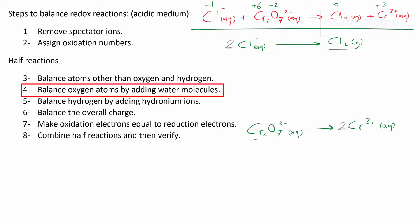So now after atoms other than oxygen and hydrogen are balanced, we go to the fourth step, which is how to balance oxygen atoms. In the first half reaction, we don't have oxygen atoms. In the second, we can see that we have seven oxygen atoms to the left, so I have to add seven water molecules to the right. So I balanced the oxygen atoms by adding water molecules.